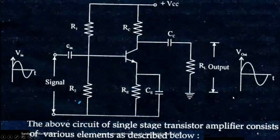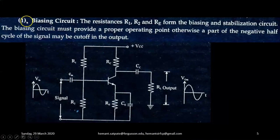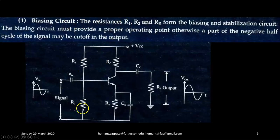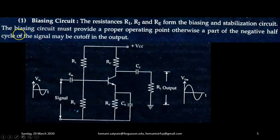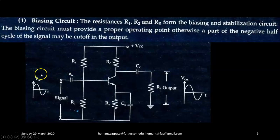Let us learn the function of each component. Number 1, the biasing circuit. The resistors R1, R2, Rc, Re, they form the biasing and stabilization circuit. The biasing circuit must provide a proper operating point. Otherwise, a part of the negative half cycle of the signal may be cut off in the output. This biasing network also establishes the operating point in the middle of the active region.